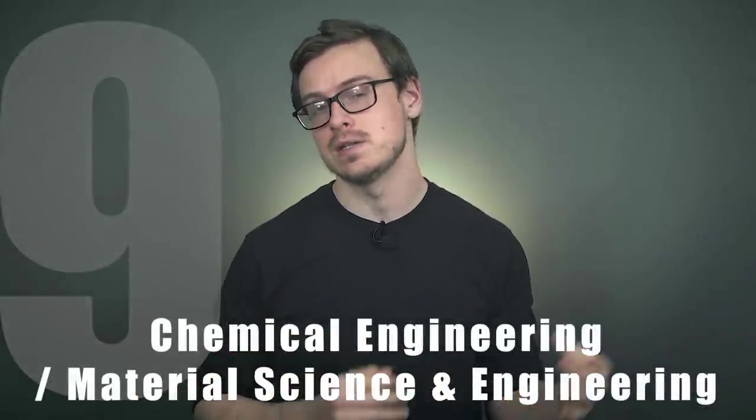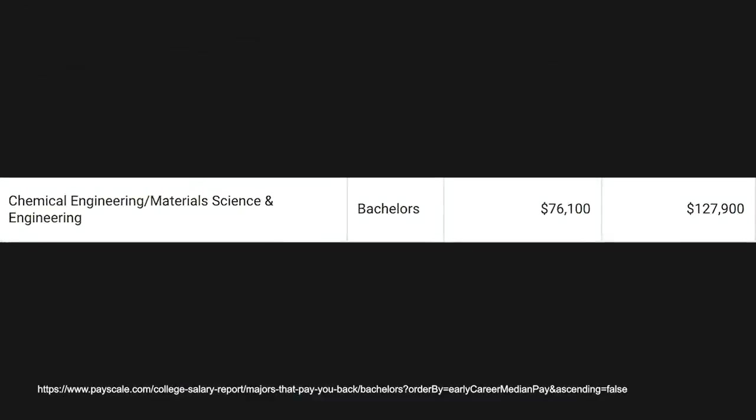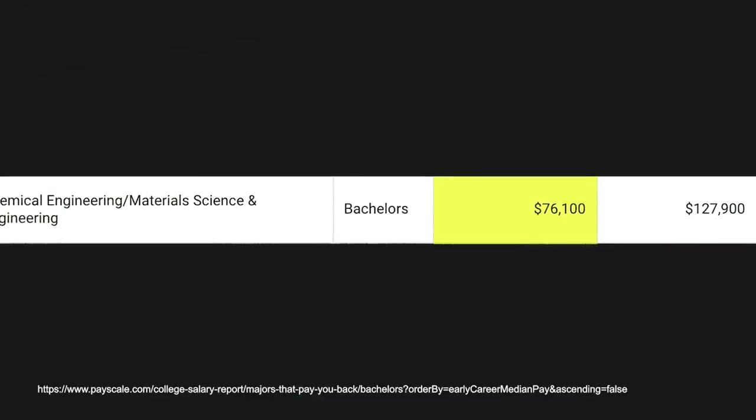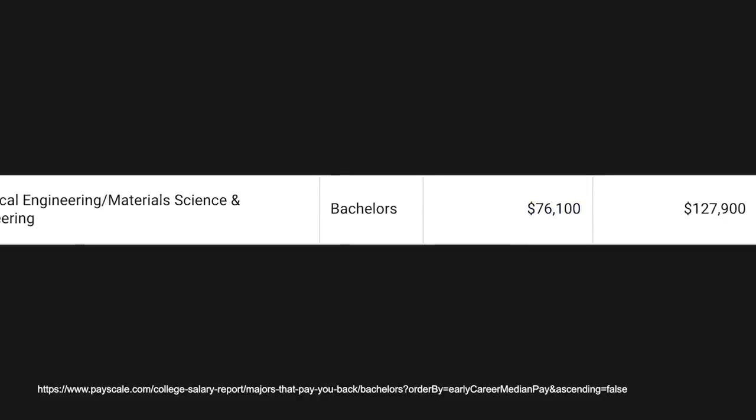Number nine on the list is chemical engineering and material science and engineering. A lot of the engineering problems popping up currently are going to be solved by people who have not only a chemical engineering background, but also a material science background. With this degree you're going to make around $76,000 a year right off the bat, and mid-career pay is going to be $127,000. Those are some really nice numbers for somebody who just graduated from college with little to no experience.